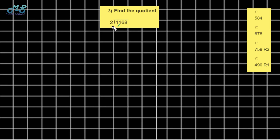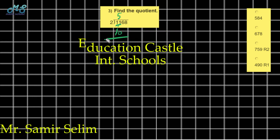Next exercise: find the quotient. 1,168 divided by 2. We studied how to divide by a one-digit number using long division. Divide from left to right. 1 divided by 2 doesn't work because 1 is less than 2, so take the first two digits: 11. 11 divided by 2 — what number times 2 is close to 11? It's 5. 5 times 2 equals 10, and 11 minus 10 equals 1.